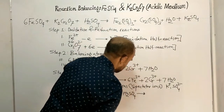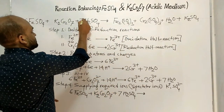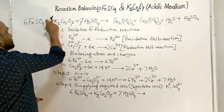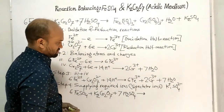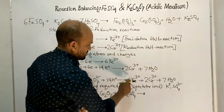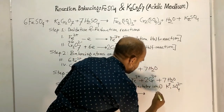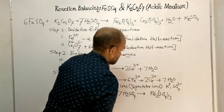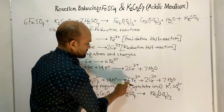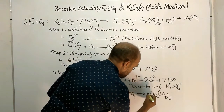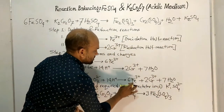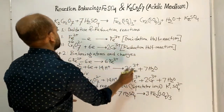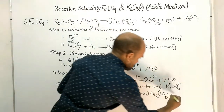On the right side, Fe³⁺ combines with sulphate ions from sulphuric acid to form ferric sulphate Fe₂(SO₄)₃. We need 6 Fe³⁺ ions, so placing coefficient 3 before ferric sulphate gives 6 iron atoms (3 × 2 = 6). Therefore, the coefficient 3 is placed before ferric sulphate.